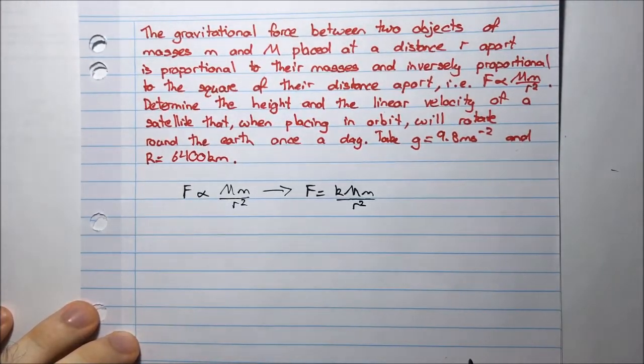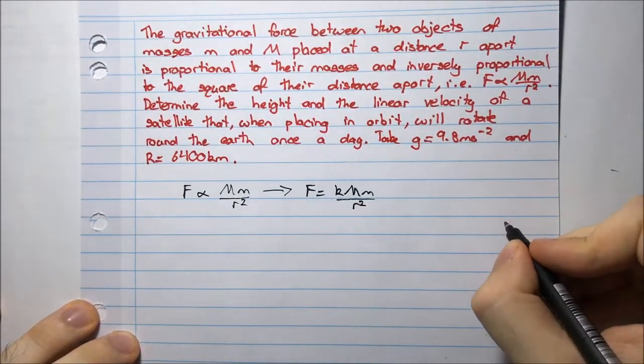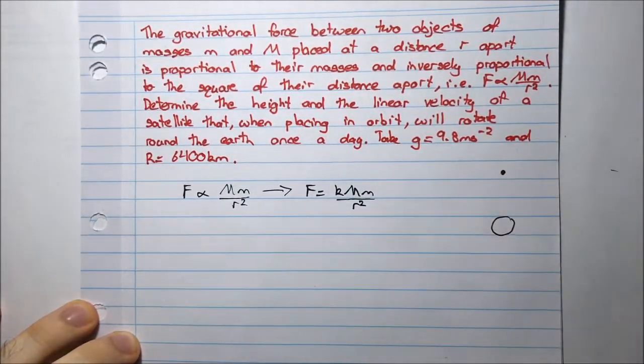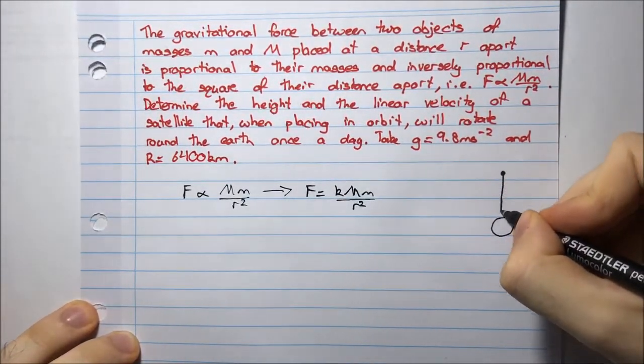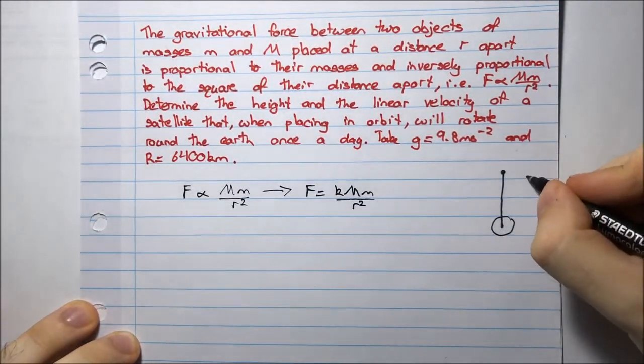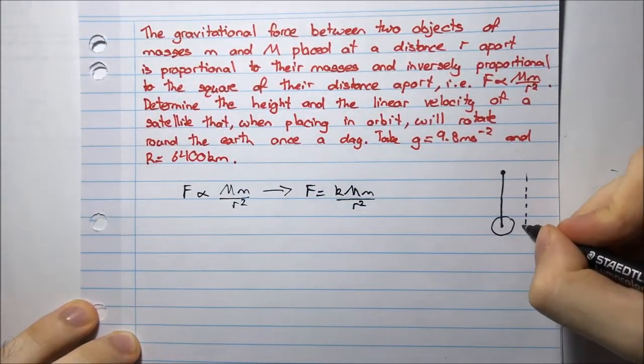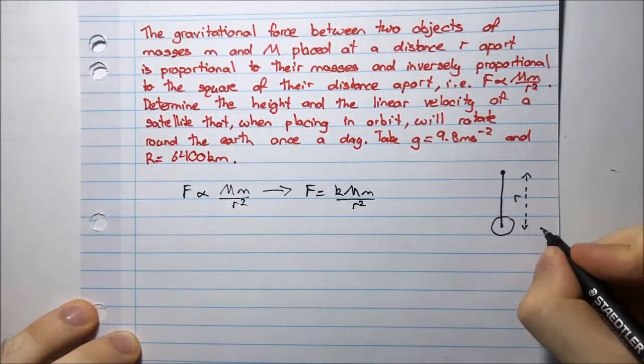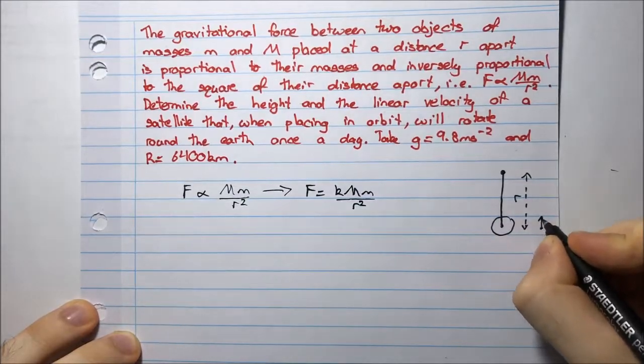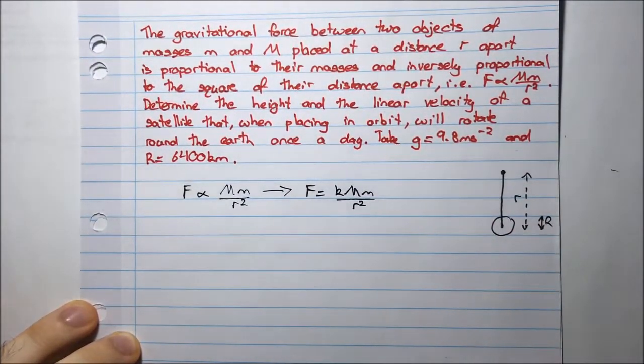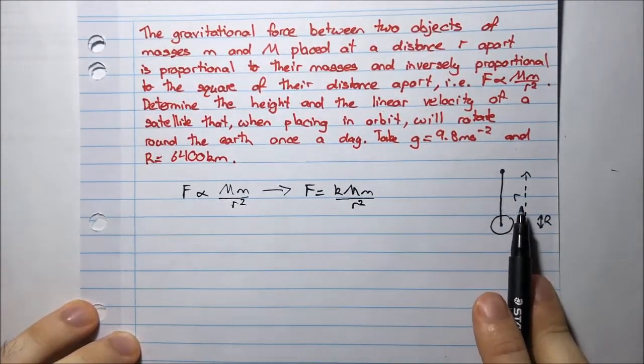I have my earth, let's get a diagram. I have the earth, and here I have some satellite, which is r units from the center of the earth. So this is little r units from the center of the earth, and from here to here, that is the earth's surface, from the center of the earth to the earth's surface, is capital R, which I'm also told its value.